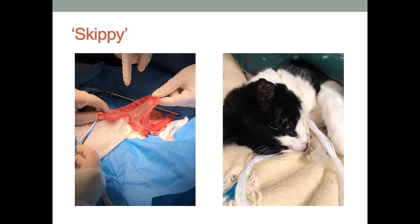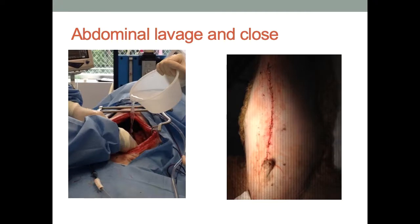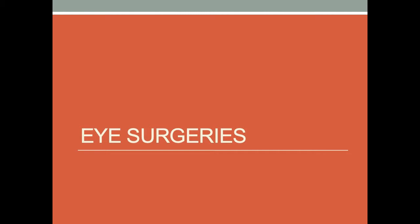After a linear foreign body removal I normally place NG tubes in patients for the first 24 to 48 hours, because of the ileus that tends to accompany large-scale trauma, and because multiple enterotomies increase my dehiscence concern. We know early enteral feeding reduces both of those problems. Then lavage everything, close everything.